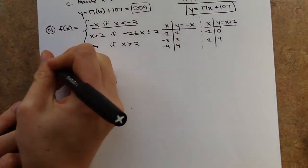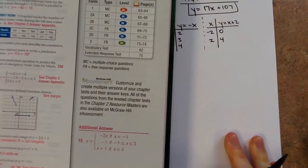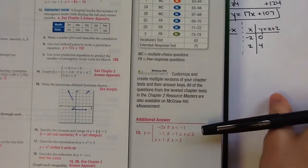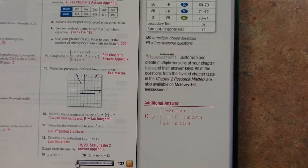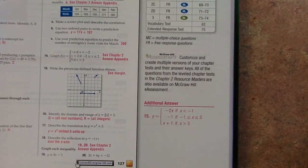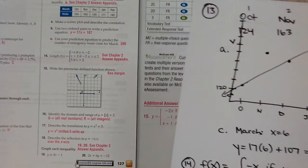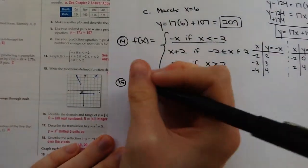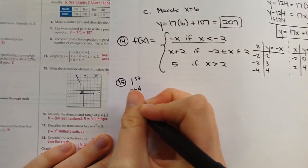Number 15: write the piecewise equation from a graph. For each diagonal piece, identify the slope and y-intercept. The first graph has slope negative 2 and y-intercept 0, the second is a horizontal line at y equals negative 1, and the third has slope 1 and y-intercept 1.